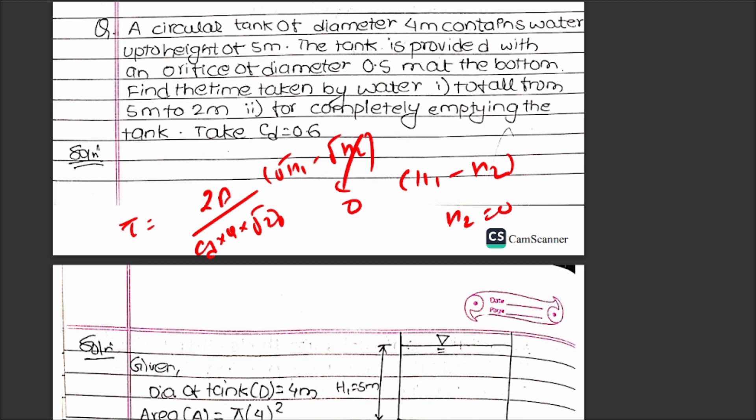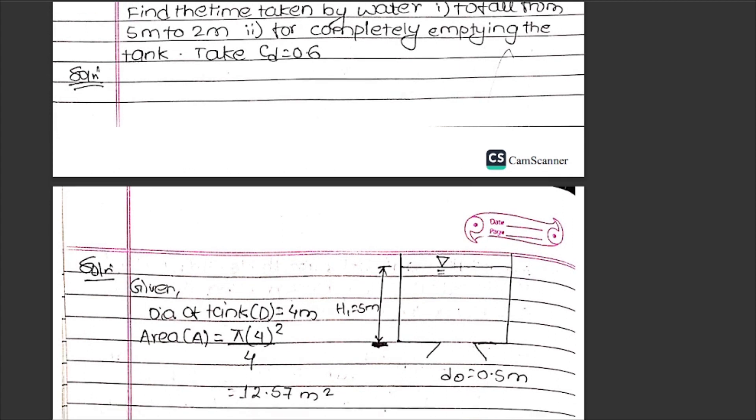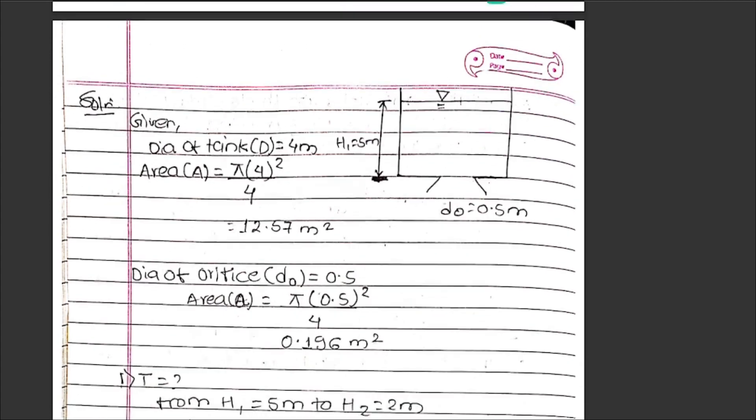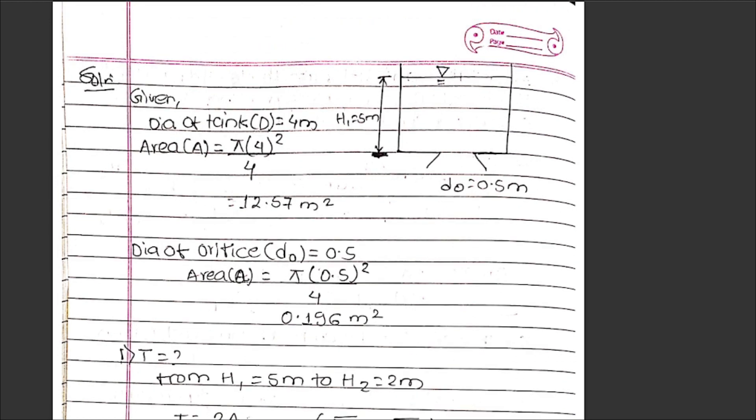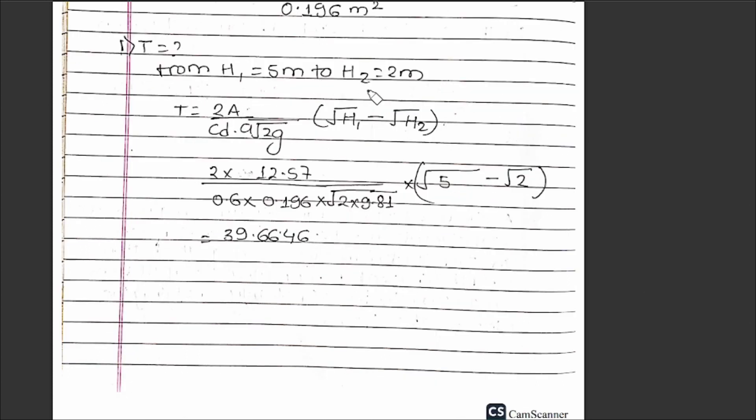First case: 5 meters to 2 meters. s1 = 5 meters, s2 = 2 meters. Diameter of tank is 4m, so area A = π(2)² = 12.57 m². Diameter of orifice is 0.5m, so area a = π(0.25)² = 0.196 m².